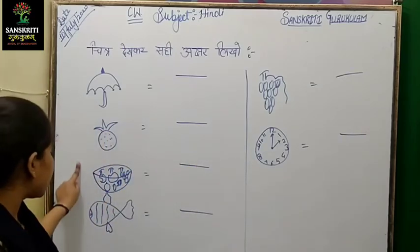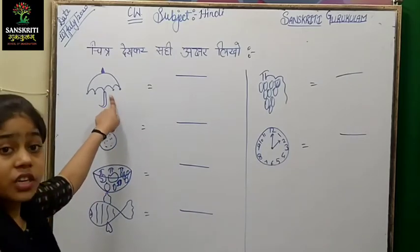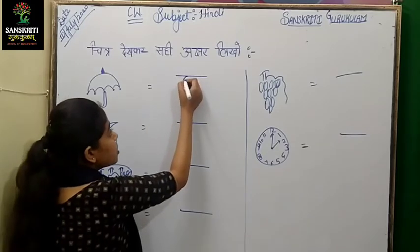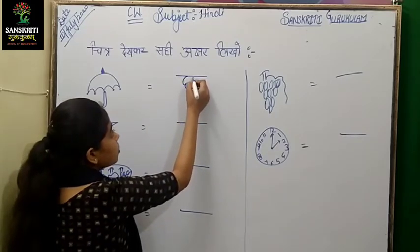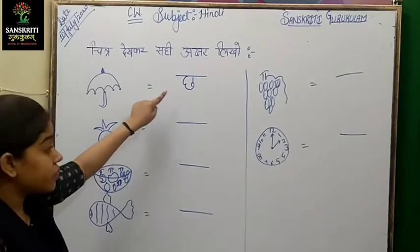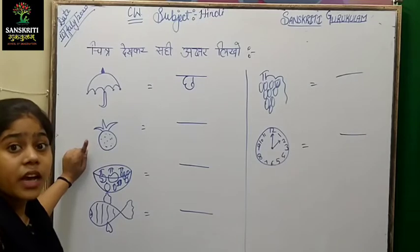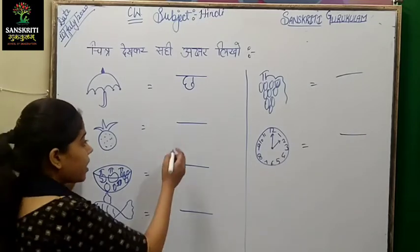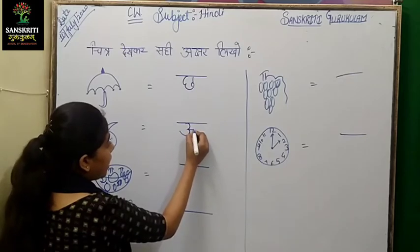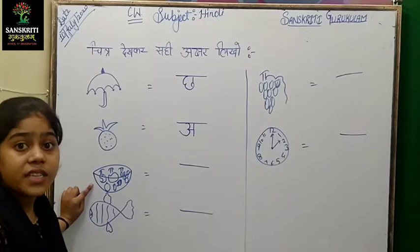चलिए पहले आपने पिक्चर देख ली, अब हम अक्षर लिखेंगे. ये क्या था बच्चों? चहसे चाता. अब हम बनाएंगे चहसे चाता. Next picture is Aase Anaar. Now, what do we have to do? Chote Aase Anaar.